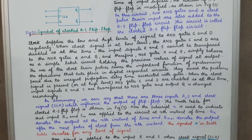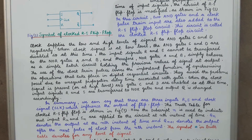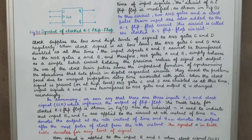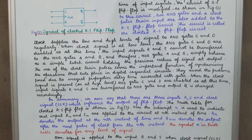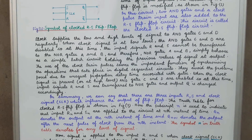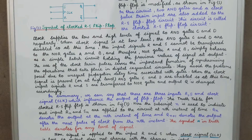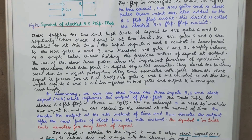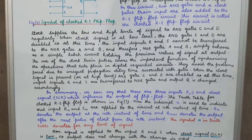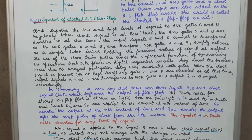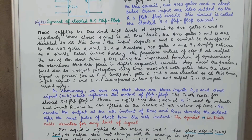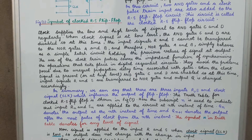The truth table is shown in figure 3. The present output is called Qn, and Qn+1 denotes the output after the next clock pulse from the nth instant — that is, after the nth clock pulse the output is called Qn+1. The symbol star in the truth table denotes any level of the signal.